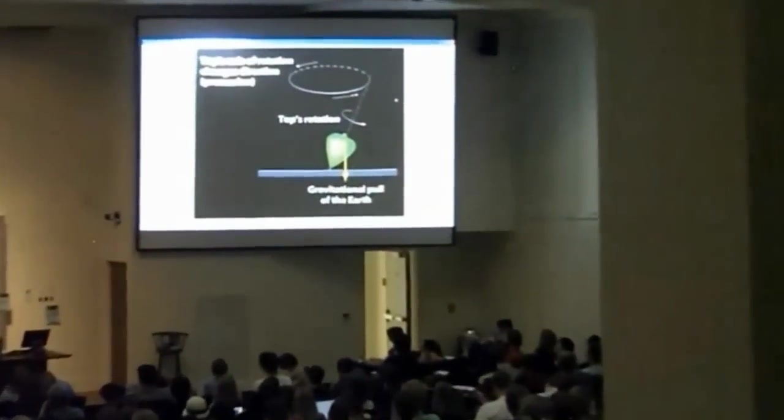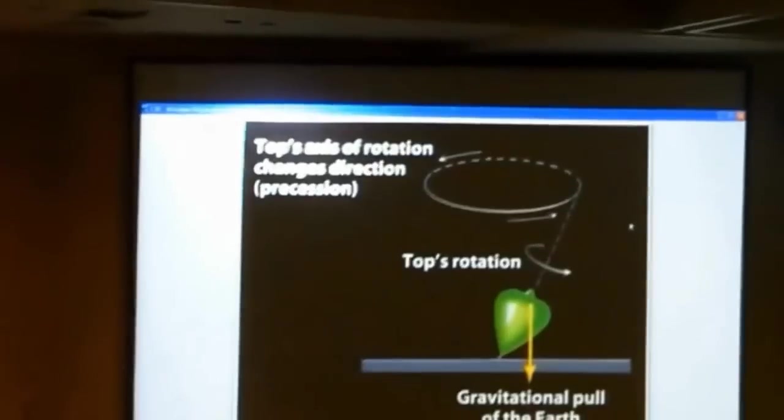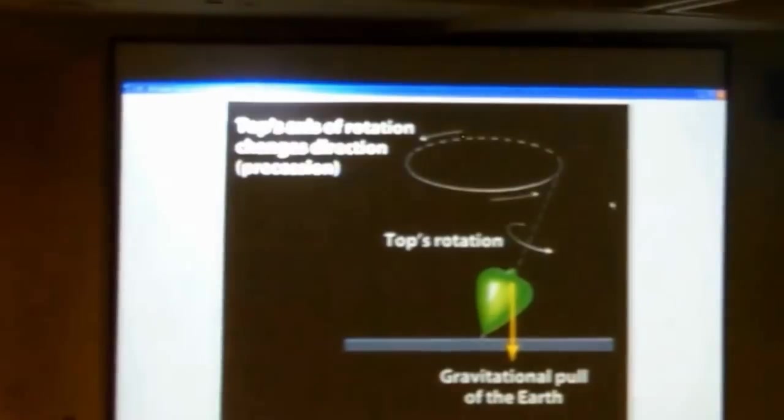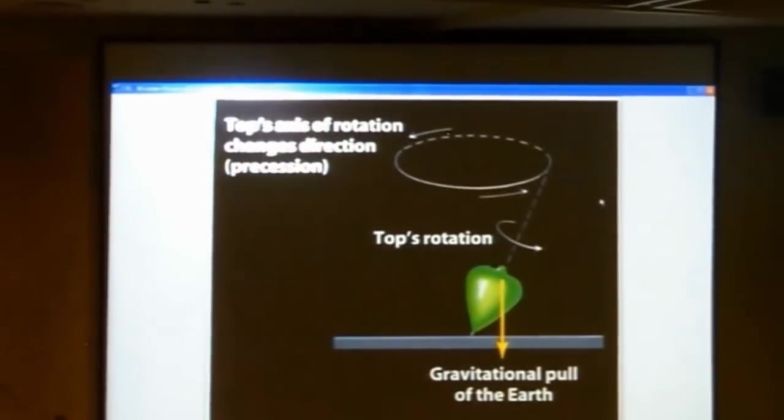Next topic is precession, which is going to correct a lie I just told you. So we've talked about daily motion, spin on the axis. We've talked about annual motion, our motion around the sun, the revolution.